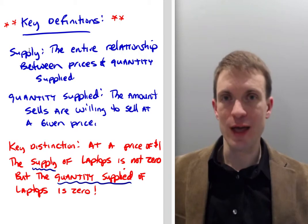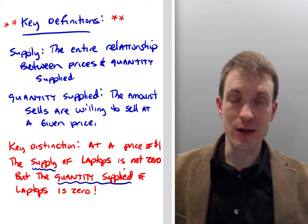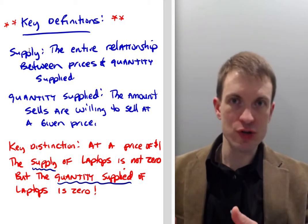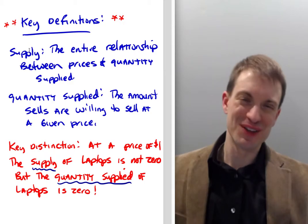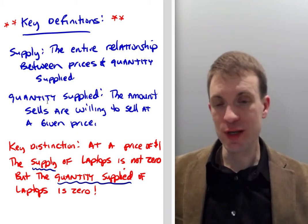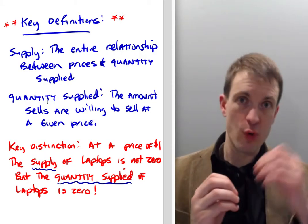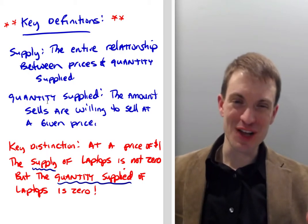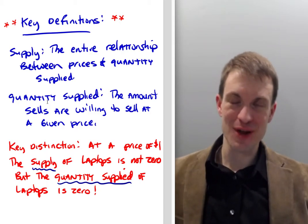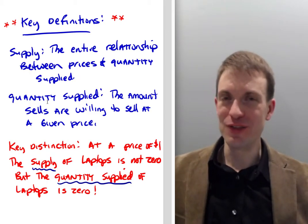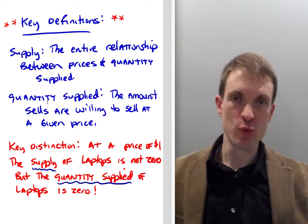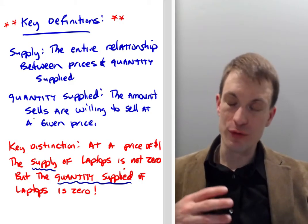For supply, the definition is analogous to demand — it's the entire relationship between all prices and quantity supplied, represented by an equation, a table, or a curve, typically an upward-sloping straight line in a principles class. By quantity supplied, we mean the amount sellers are willing and able to bring to market at a given price. At a price of a dollar, the supply of laptops is not zero, but the quantity supplied might be, because not many sellers would be eager to sell at that price. Supply refers to the entire relationship.